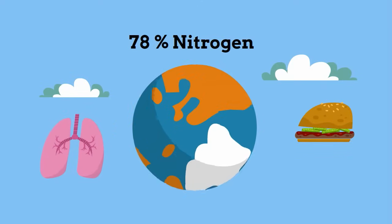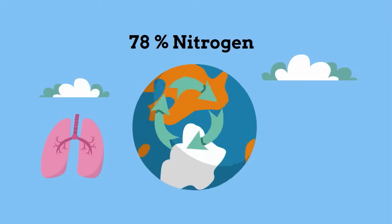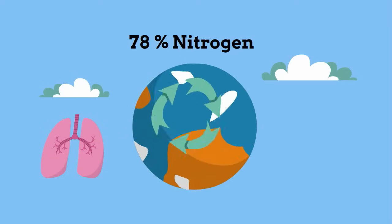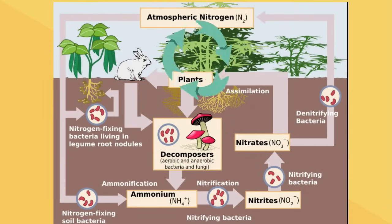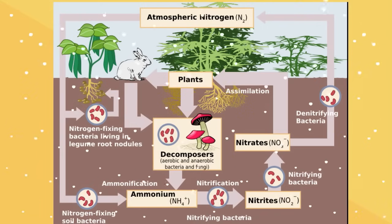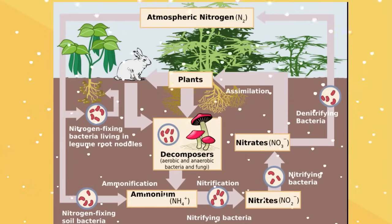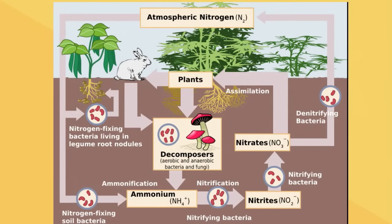Nitrogen follows a cycle where it travels from the atmosphere to the soil to animals and back. Nitrogen in the atmosphere falls to the earth by precipitation such as rain or snow.